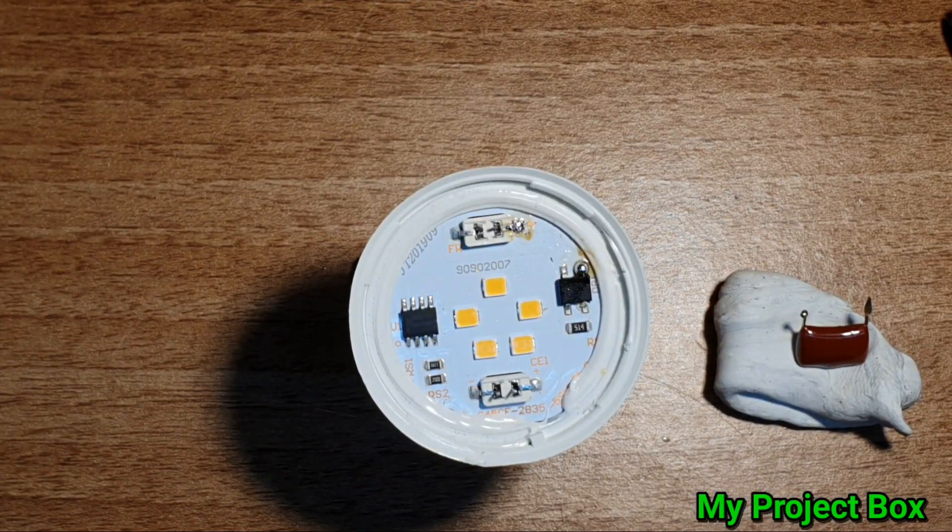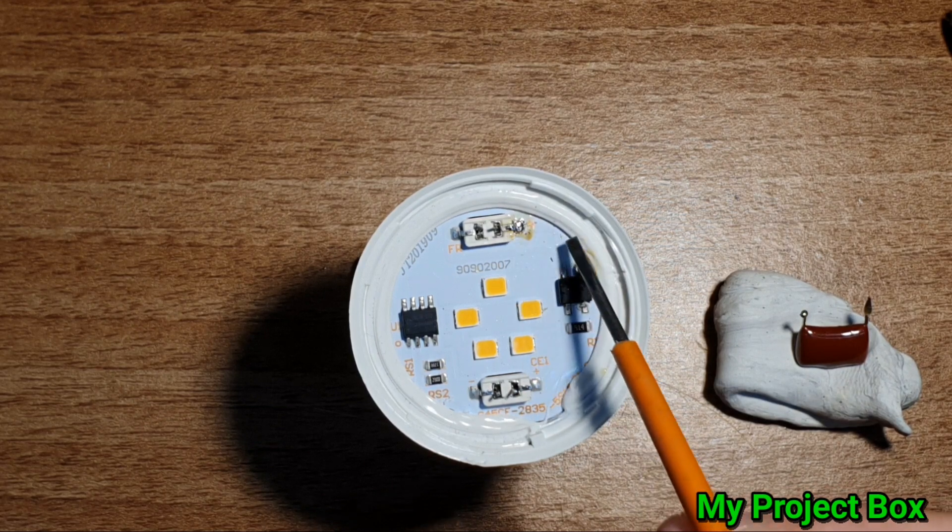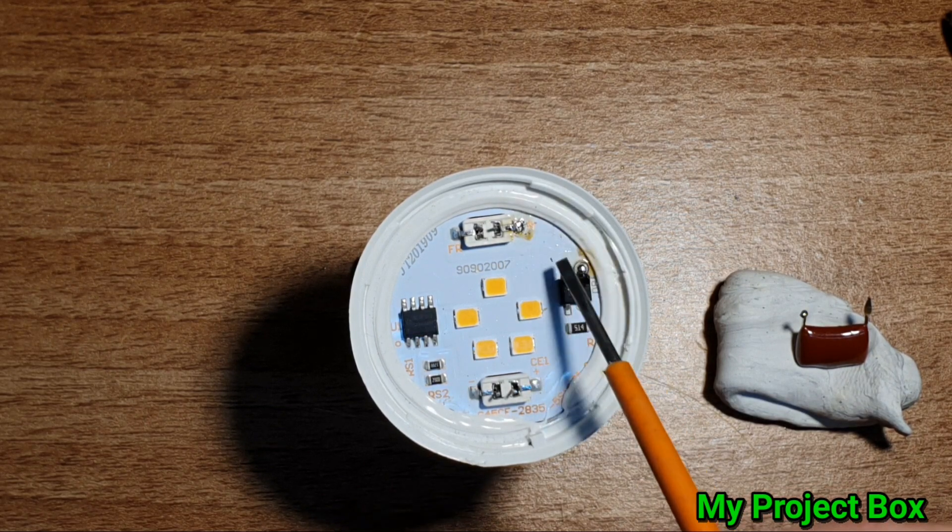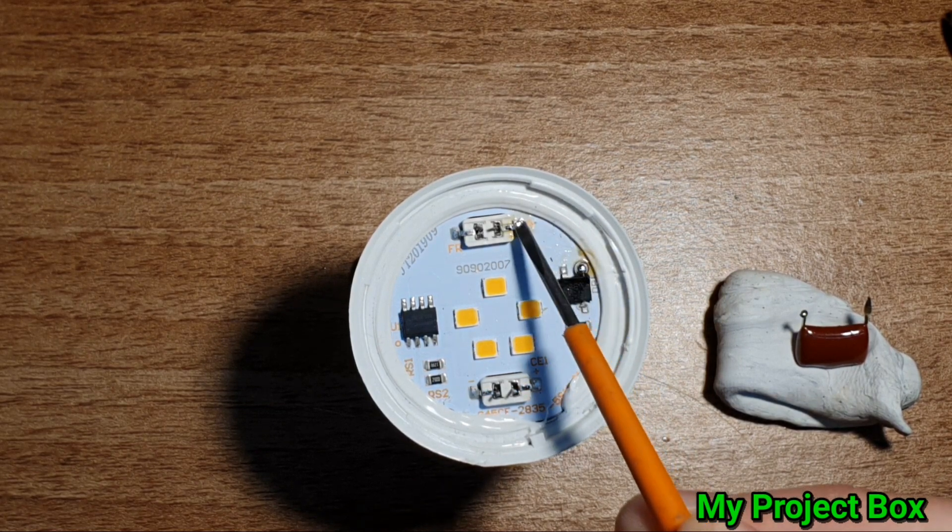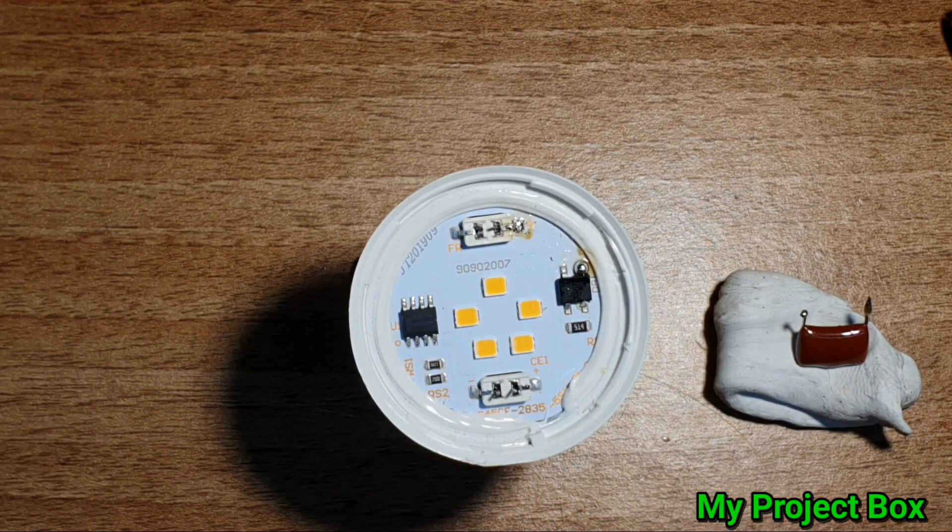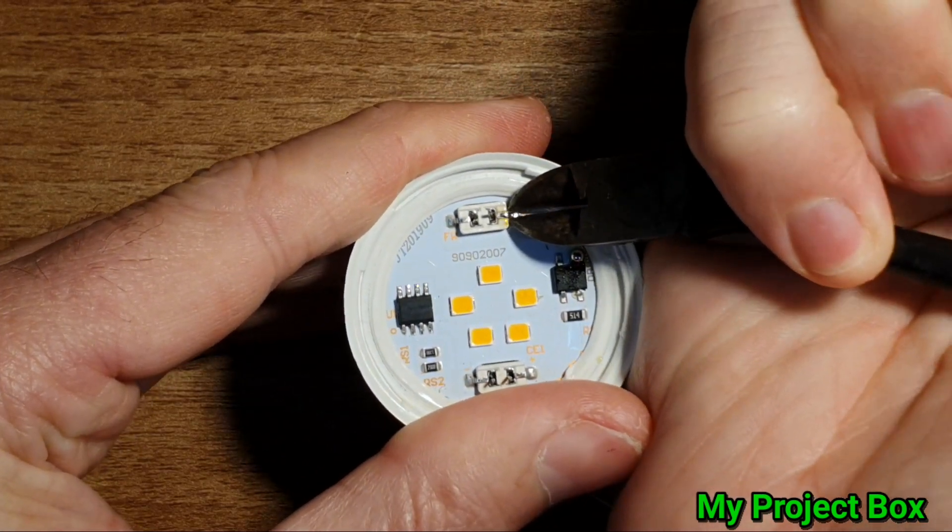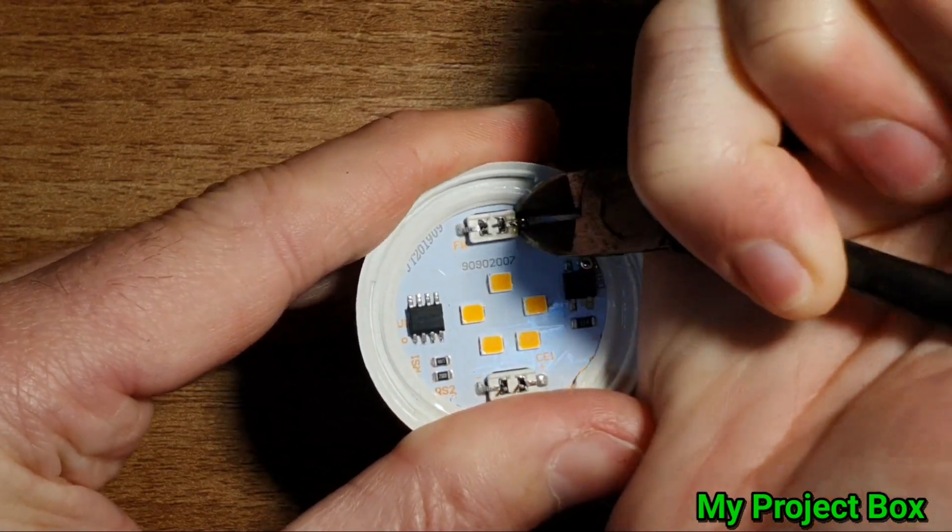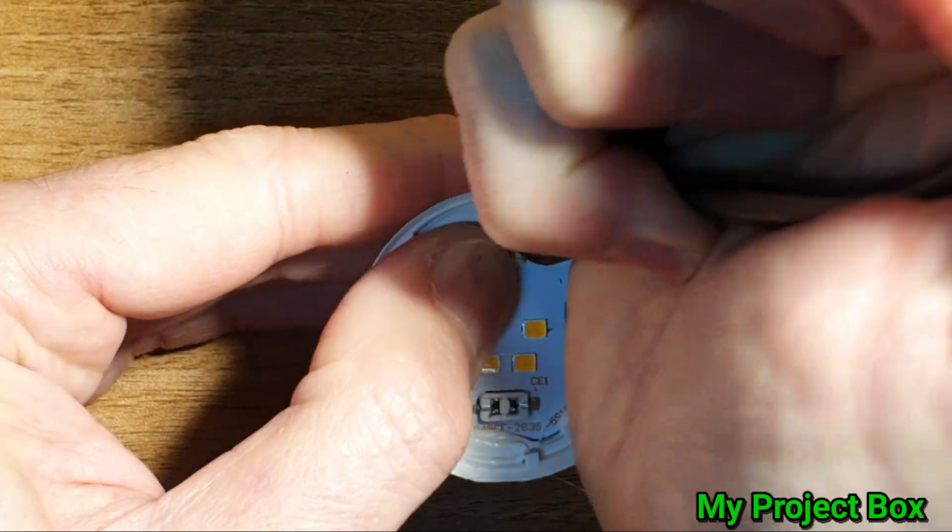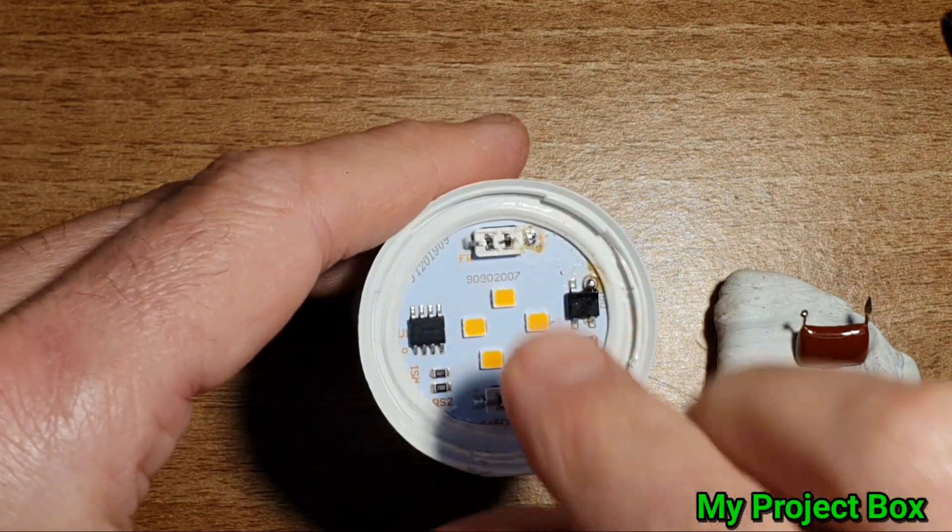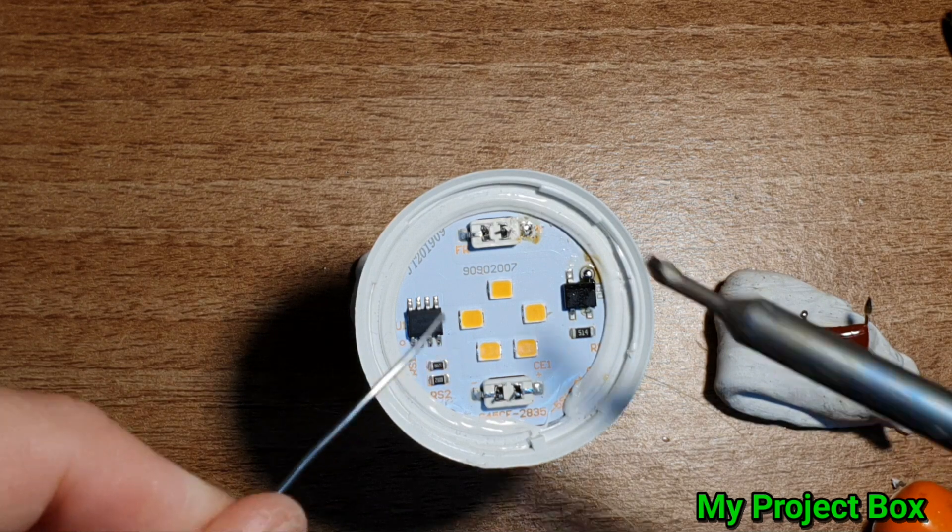I think what we need to do is break that connection there. This is a track that runs all the way to there. I don't want to break the track on the board because it's aluminum underneath and I don't want to short the aluminum. I think we can just carefully break this little link there. I'm just going to use the side cutters to nibble away at it. There we go, it seems to be nicely broken. So let's put a little dot of solder on it.